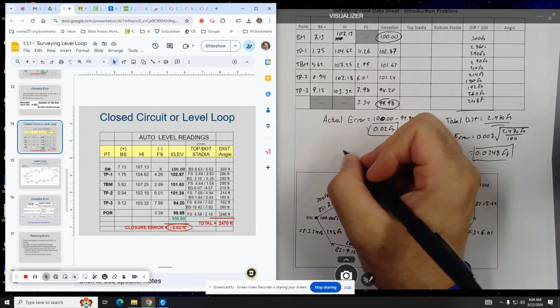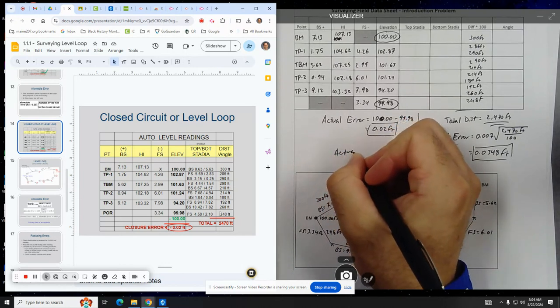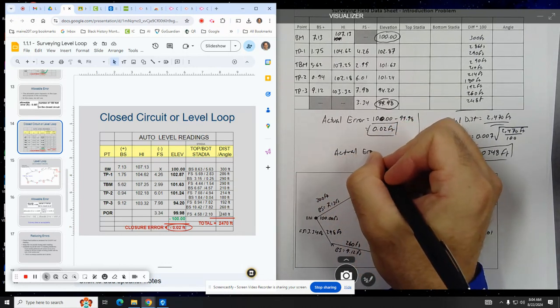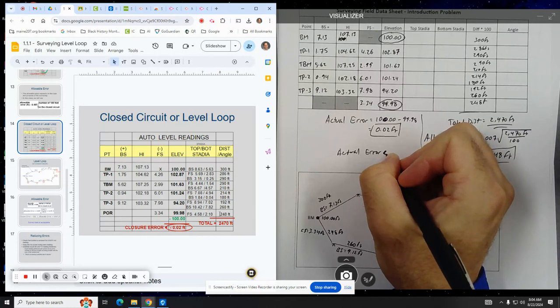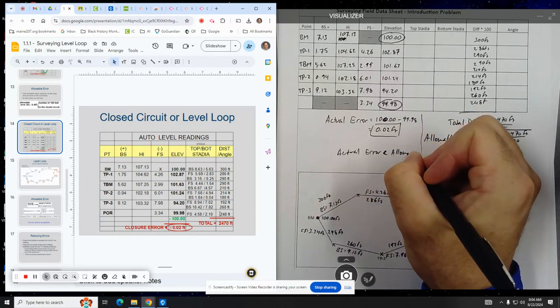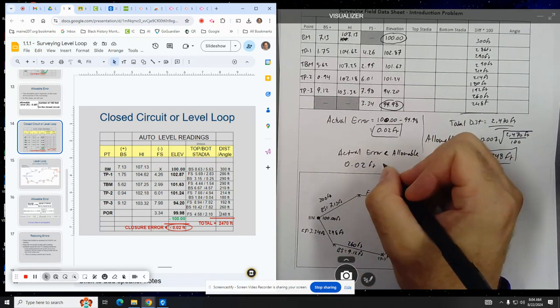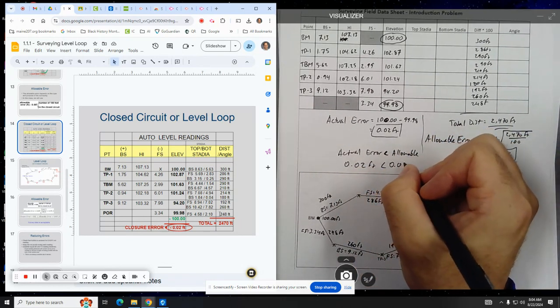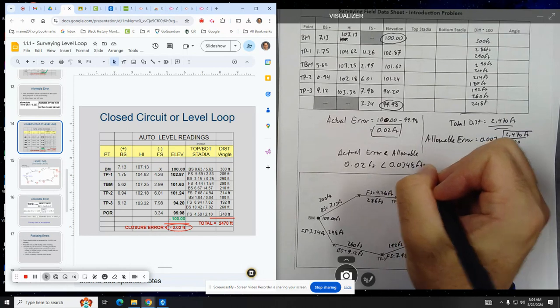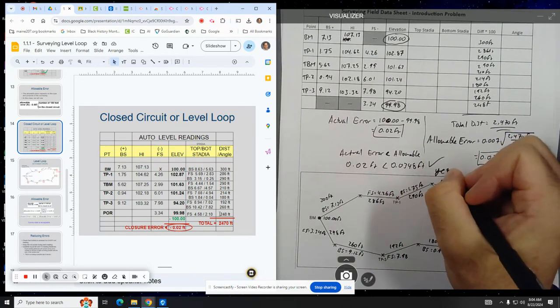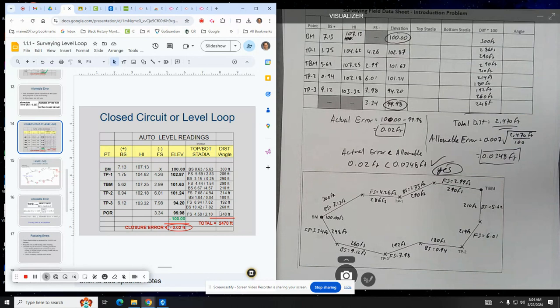So is ours good? Is our actual error, you always want the actual error to be less than the allowable. Is that the case? 0.02 feet? Is it less than 0.0348 feet? And the answer is yes. So we are good. And that's the basics of how this stuff is done for a level loop.